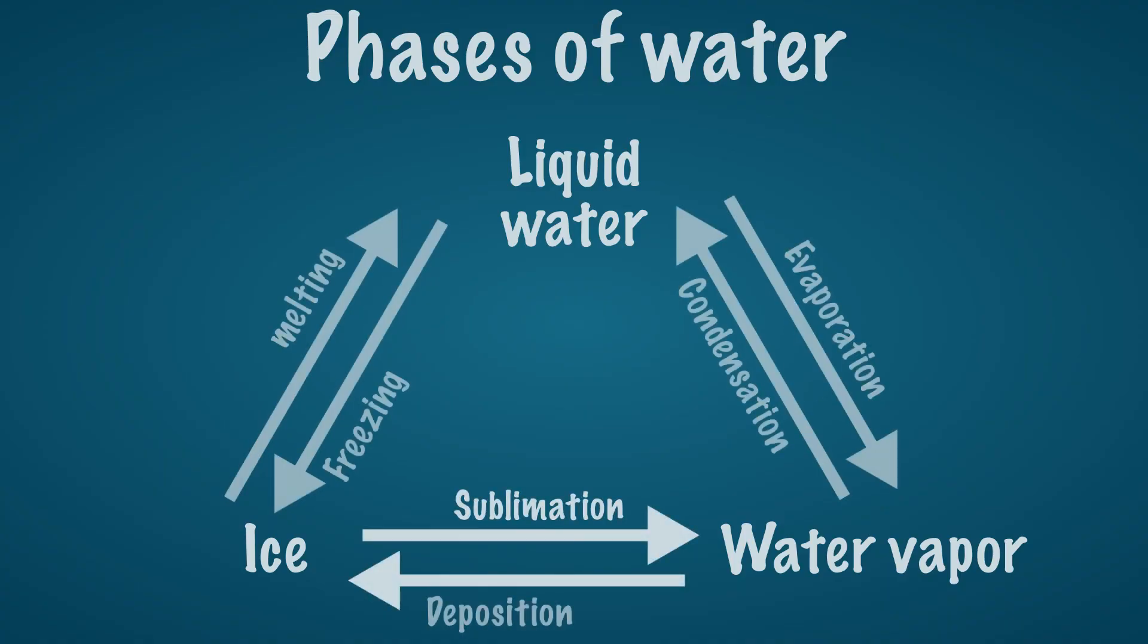This is often shown in this diagram. Here the three phases and the phase transitions are shown. Now that the three phases of water have been discussed, the following videos explain how precipitation is formed.